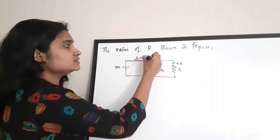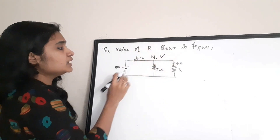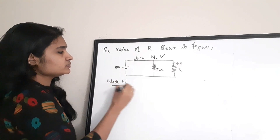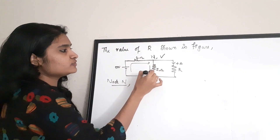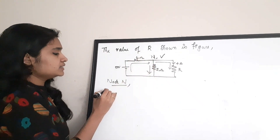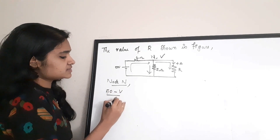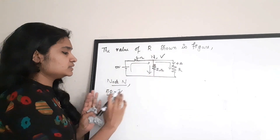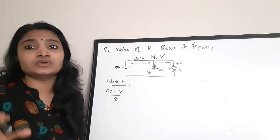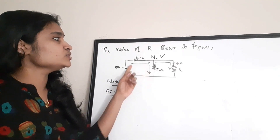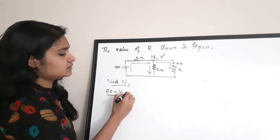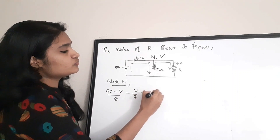I'm going to take this as node N and take the voltage as V, then apply nodal analysis and write the nodal equation for node N. This current is flowing towards the node, and these currents are flowing away from the node. When the current is flowing towards the node we take it as positive, and when flowing away we take it as negative. So the nodal equation is: (50 − V)/6 − V/7 − 4 = 0.